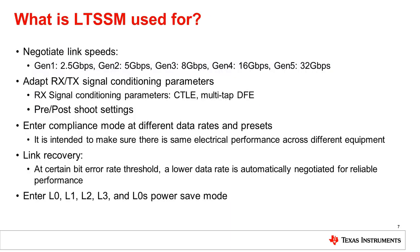The latest PCIe products today support PCIe Gen 5, which is 32 gigabits per second. These data rates need to be negotiated through polling and configuration to decide a specific data rate based on the media bandwidth and insertion loss. The receiver and transmitter signal conditioning parameters also need to be negotiated to ensure a PCIe link has an acceptable bit error rate. To enable compatibility among different equipment, compliance patterns are used to check adherence to the physical electrical interface parameters, such as preemphasis or deemphasis. These are mainly used to increase signal reach across different transmission media.